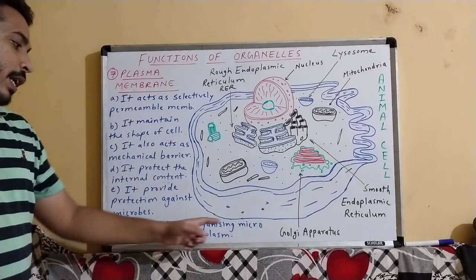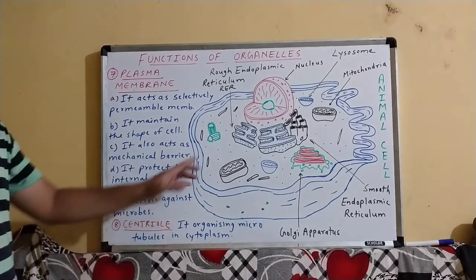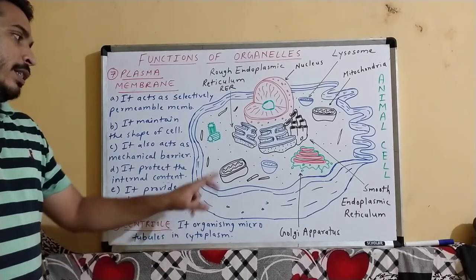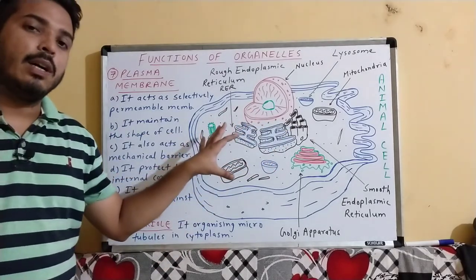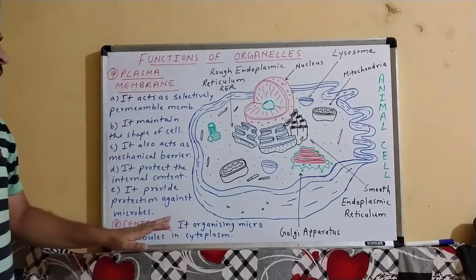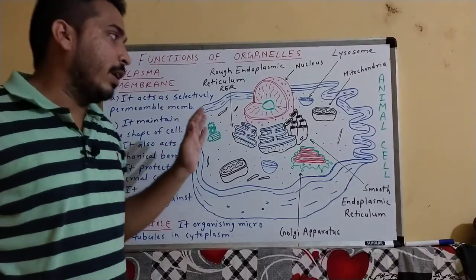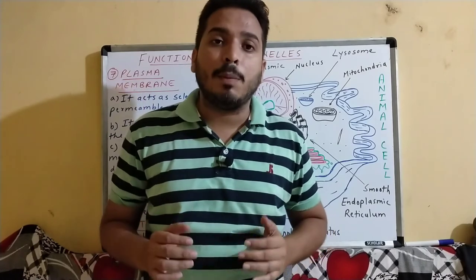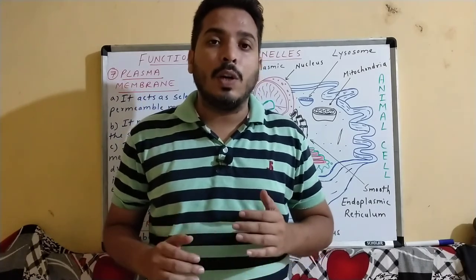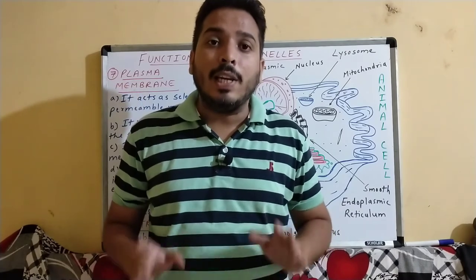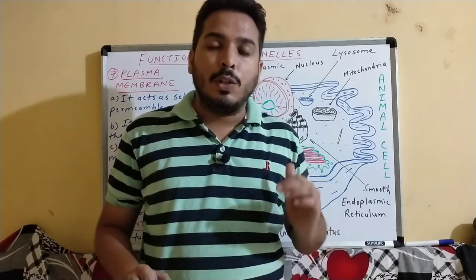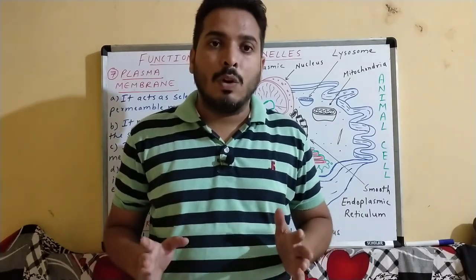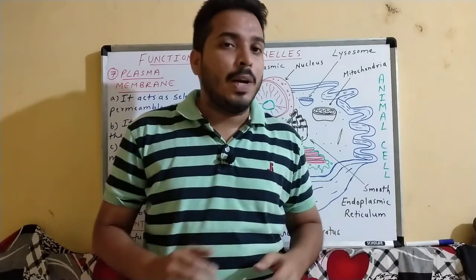The last organelle is centriole, visible in green color on the board. Its function is organizing microtubules in the cytoplasm — it arranges the microtubules inside the cytoplasm. So these are all the cell organelles of the animal cell. If you like this video please subscribe to my YouTube channel Science with Hemant Rathur, share with your friends, and ask any doubts in the comment box.